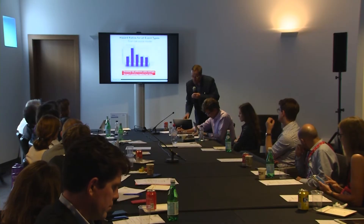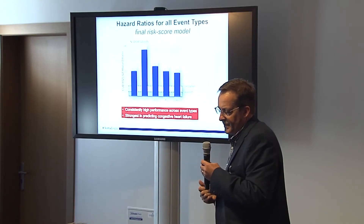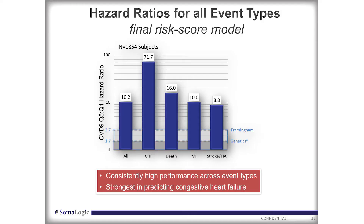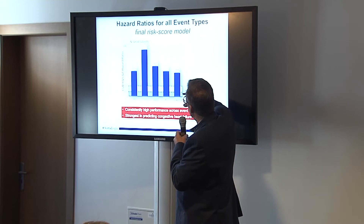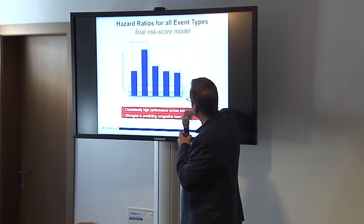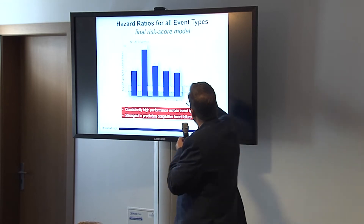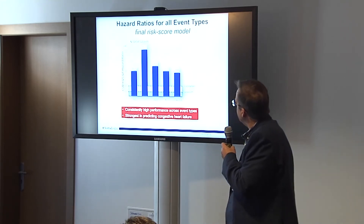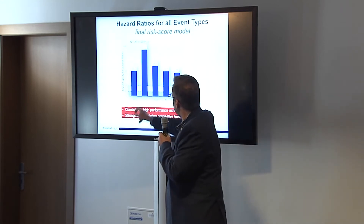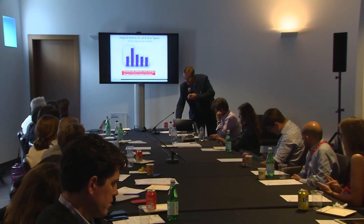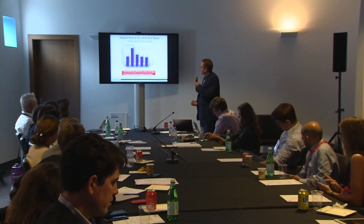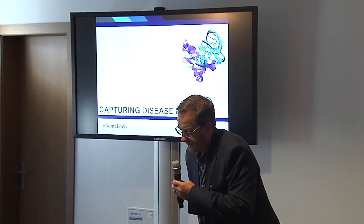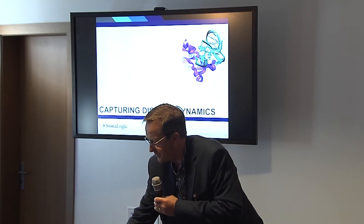It is a discovery platform as well. If you fix the event prediction model and look at how it performs — this is a hazard ratio analysis based on the final risk score — we know that it performs consistently better than genetics and conventional clinical parameters. There is a bias in terms of predictive performance for certain types of event, and it's markedly improved for heart failure. So we've got the capacity to predict events, but what about capturing disease dynamics?